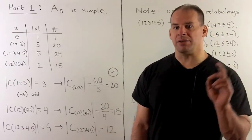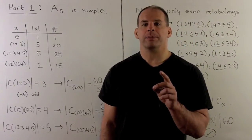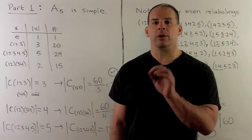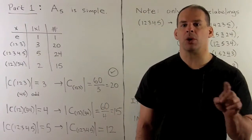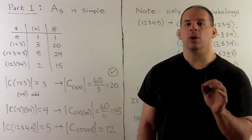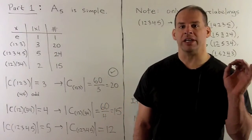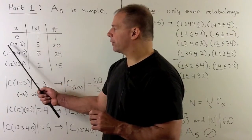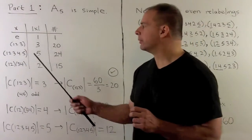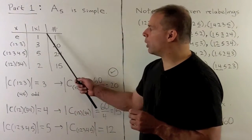First case: A5 is simple. If we have a normal subgroup in A5, the conjugacy classes are going to partition that normal subgroup, and the order of the normal subgroup divides 60. So we'll see that the combinatorics only work out if we have the identity subgroup or all of A5. The alternating group on n letters consists of all even permutations. So we have the identity element, three-cycles (a cycle is an even permutation if it has an odd number of labels), five-cycles, and products of disjoint two-cycles. Orders of elements are going to be 1, 3, 5, and 2.